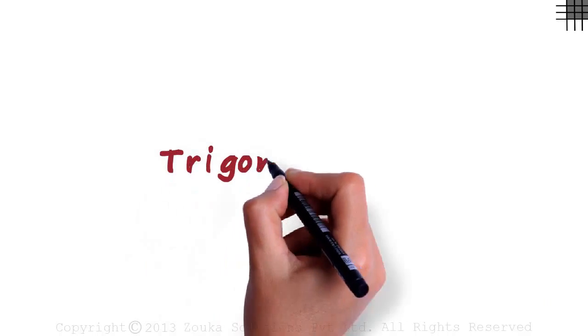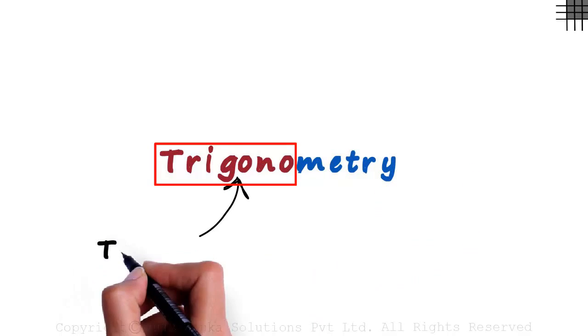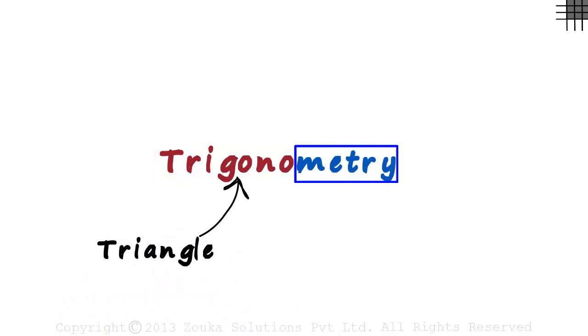What does trigonometry actually mean? In Greek, the red part means triangle and the blue part means measure.